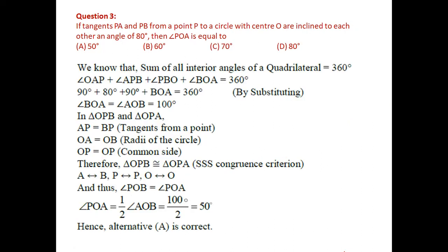Question 3: tangents PA and PB from a point P to a circle with center O are inclined to each other at 80 degrees. Find angle POA. I forgot to download the figure, so I will draw it. Here is the circle with center O.